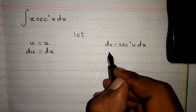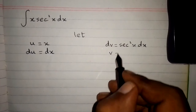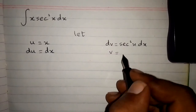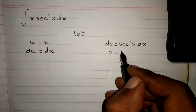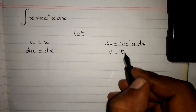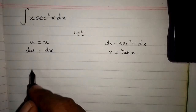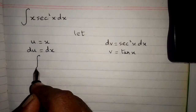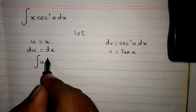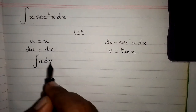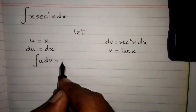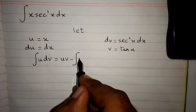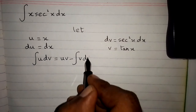Integrating both sides, we have v equal to tan x. The formula of integration by parts is: the integral of u dv is equal to uv minus the integral of v du.